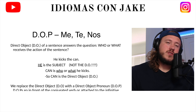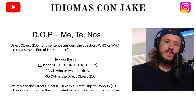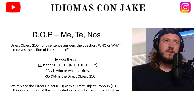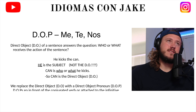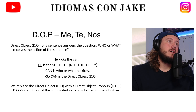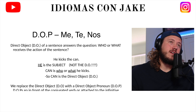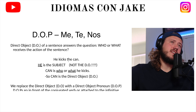The direct object of a sentence answers the question: who or what receives the action of the verb in that sentence. El objeto directo responde a la pregunta: ¿quién o qué recibe la acción del verbo de la oración? Fijémonos en este ejemplo. Let's check out this example.